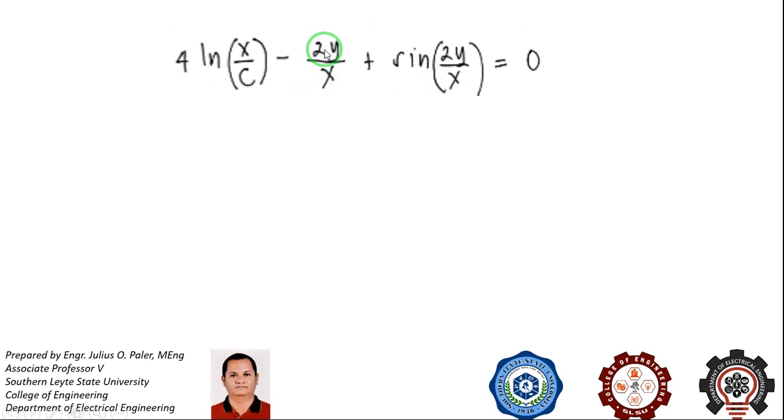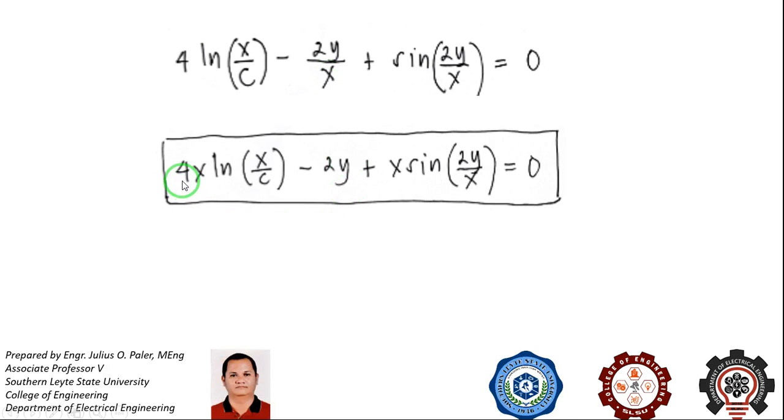Substituting for v, you will have 2y over x. Multiplying by x to eliminate the x denominator here in the second term, it will give you 4x ln of x over C quantity minus 2y plus x sine of quantity 2y all over x is equal to 0.